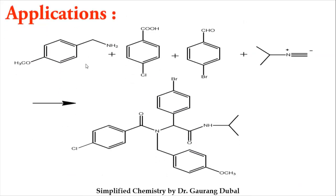For the application of the Ugi reaction: paramethoxybenzylamine is used as the amine component, 4-chlorobenzoic acid as the acid component, 4-bromobenzaldehyde as the carbonyl component, and isopropyl isocyanide as the isocyanide component. Mixing all four components together will always give a diamide product according to the Ugi reaction.